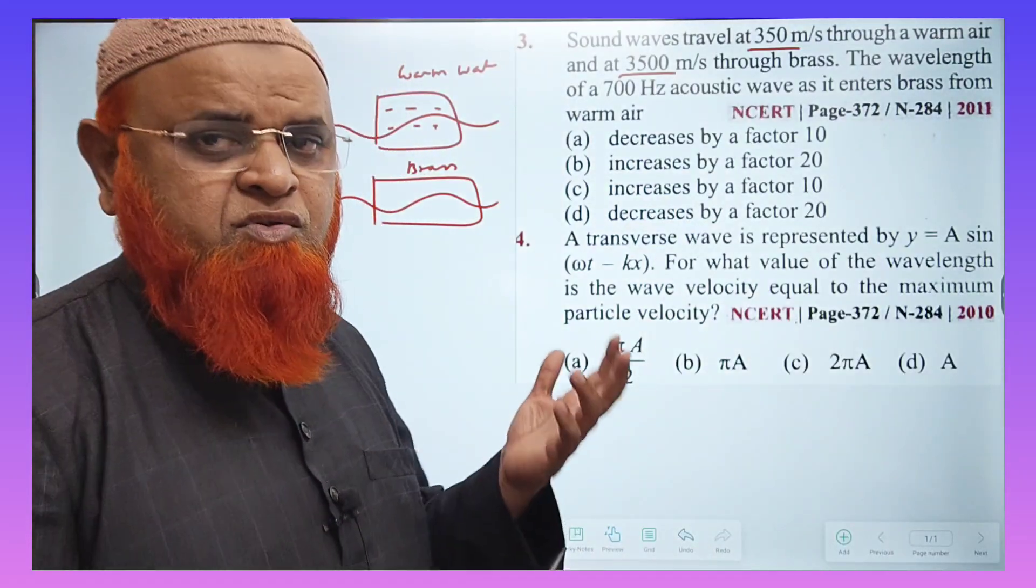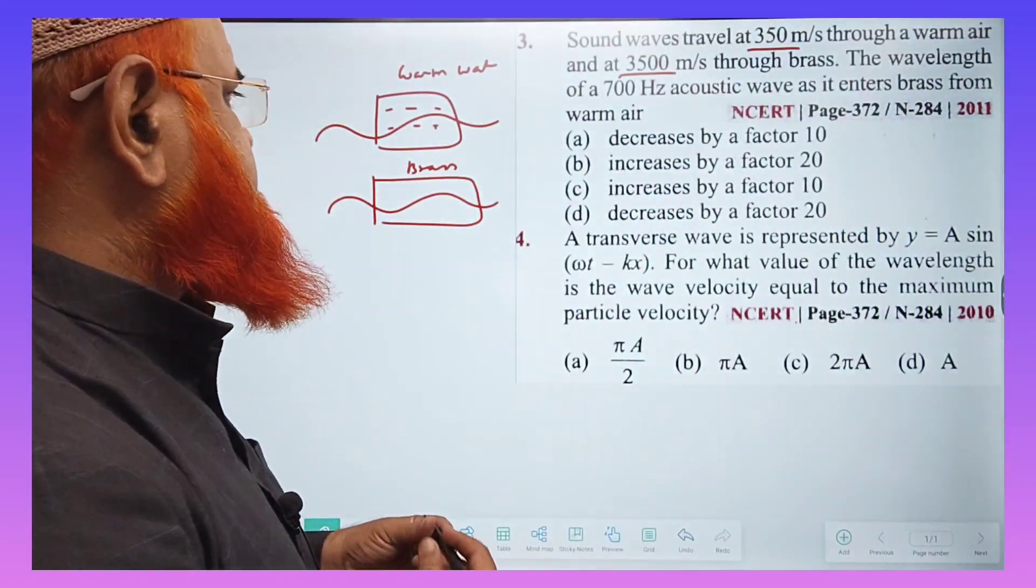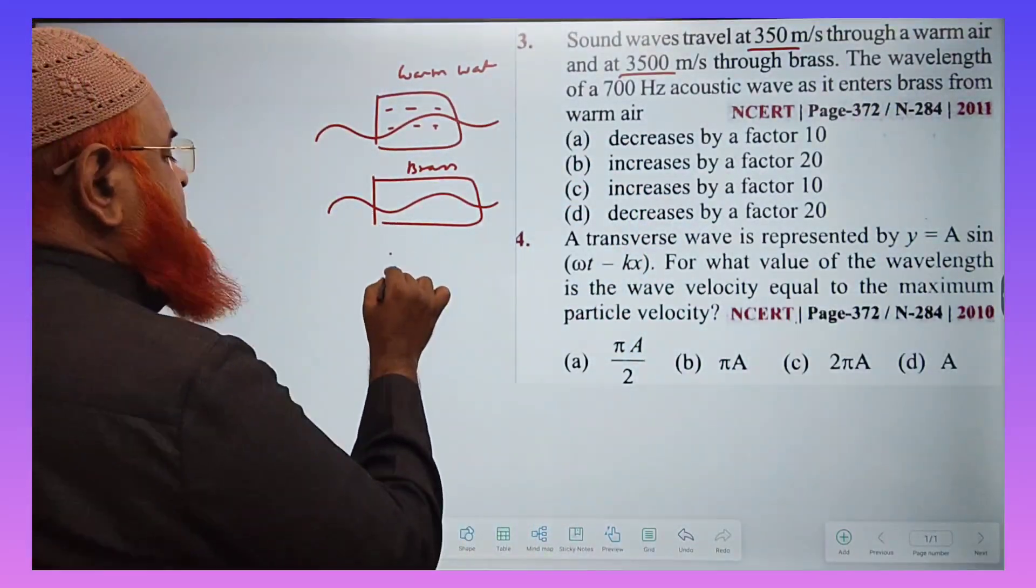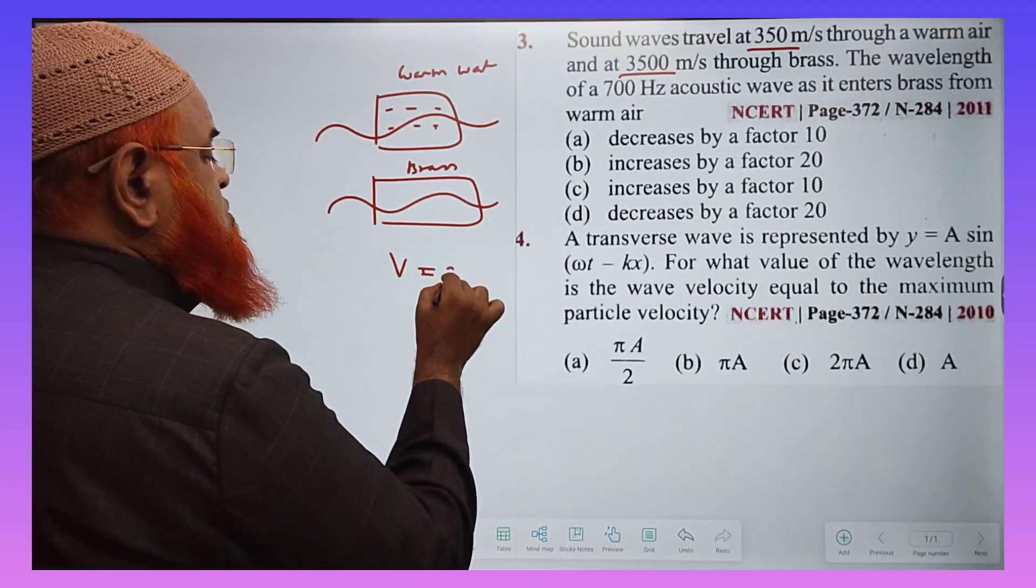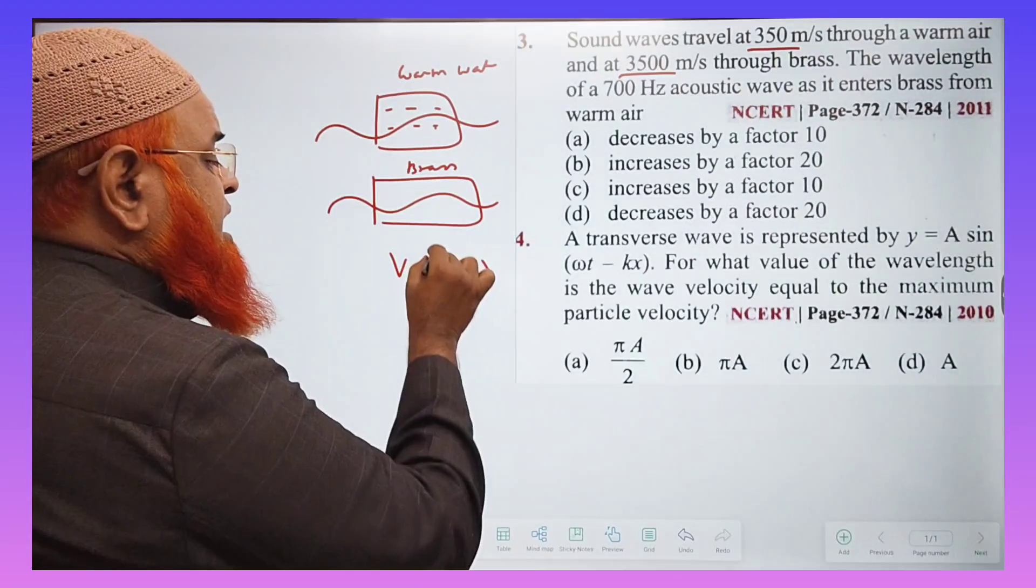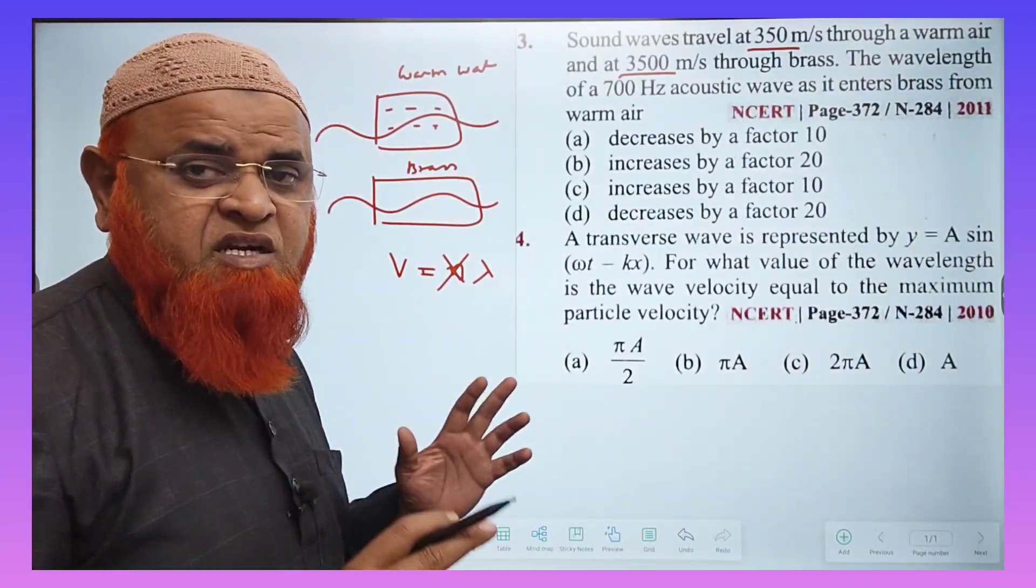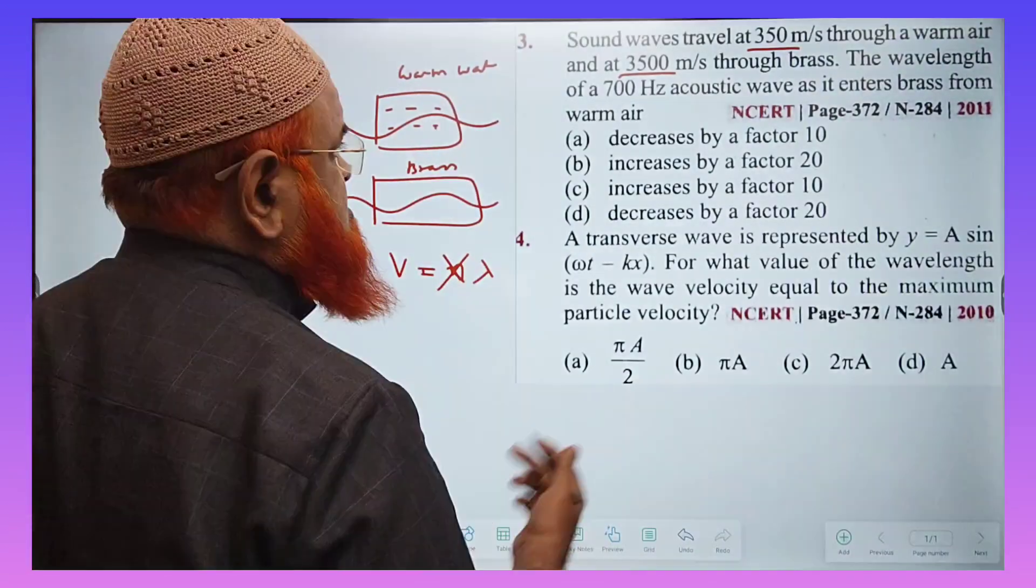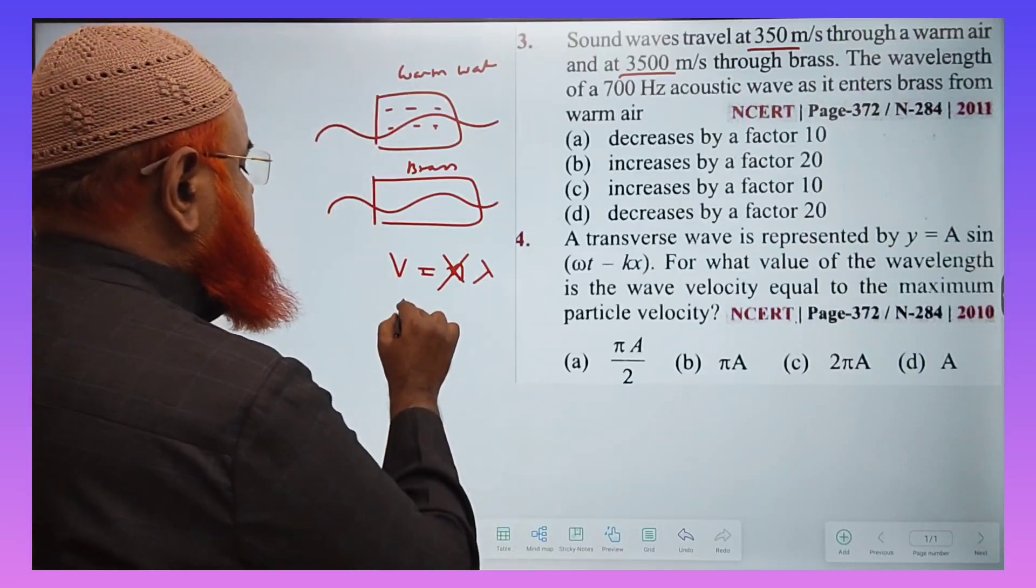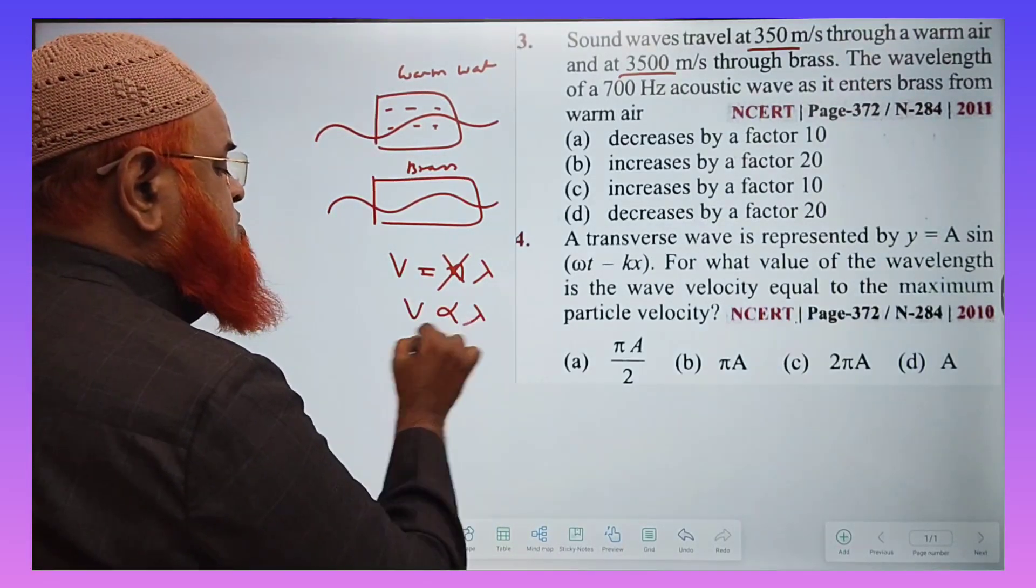This shortcut will help you to solve the problem which is given here. So from this it is understood that V is equal to N lambda. And frequency is going to be constant. So with this it is understood that V is directly proportional to lambda.